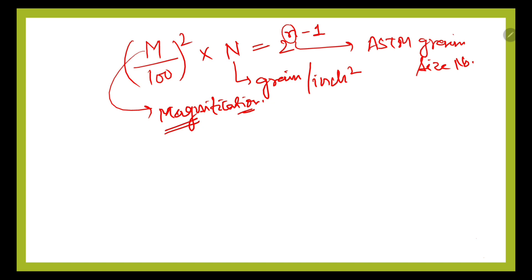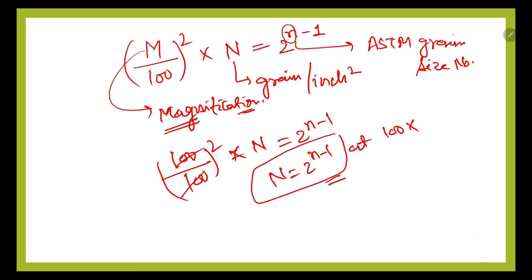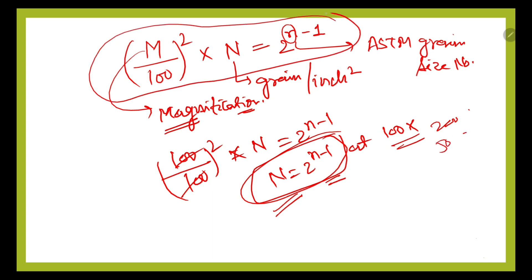In the previous formula, the magnification is given at 100x, so N equals 2 to the power (n minus 1) at 100x. In a question, if it is given to calculate the number of grains per inch square at 100x, we use this formula. If it is given at any other magnification like 200x or 50x, then we use the general formula with M.